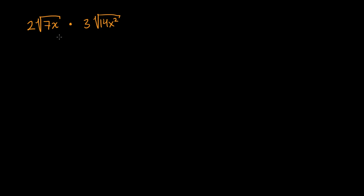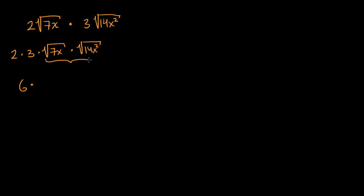Let's first just multiply this thing. We can change the order of multiplication. This is going to be the same thing as two times three, times the square root of seven x times the square root of 14 x squared. And so this is going to be equal to six times — the product of two radicals you could view as the square root of the product. So six times the square root of...